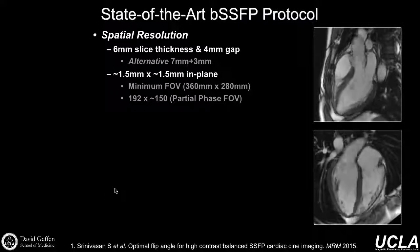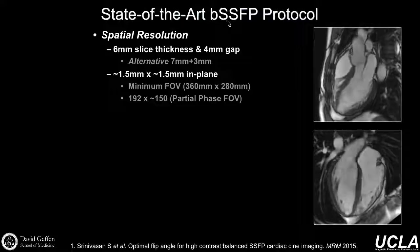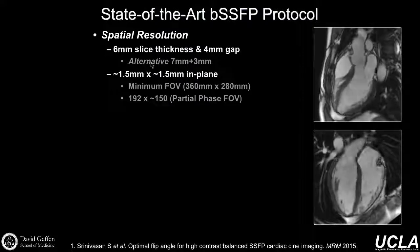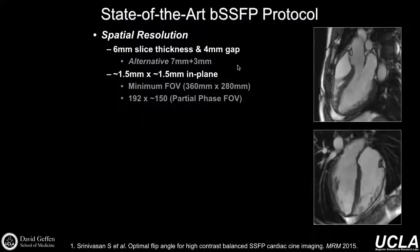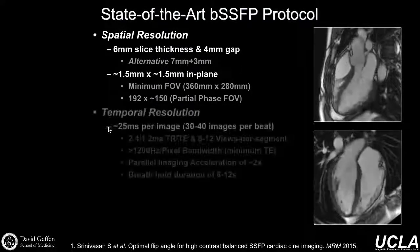Kicking off with what makes a good state-of-the-art balanced SSFP protocol — the key being that we use balanced SSFP. Every vendor has a slightly different name for this, but this is the preferred bright blood method for evaluating cardiac function at the global level and looking at valves and gross anatomy generally. In terms of spatial resolution, the rule of thumb is six millimeter slices with four millimeter gaps — a total of ten millimeters — and about one and a half by one and a half millimeters in-plane gives you pretty good quality images.